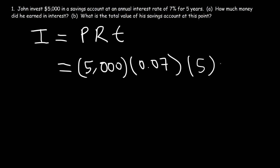So all we've got to do is take 5,000, multiply it by 0.07, times 5. So he receives a total of $1,750 in simple interest.